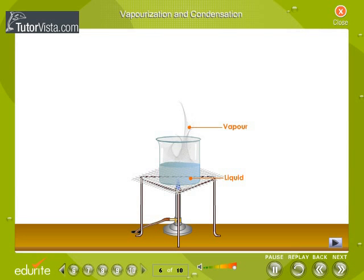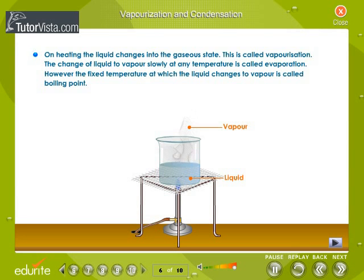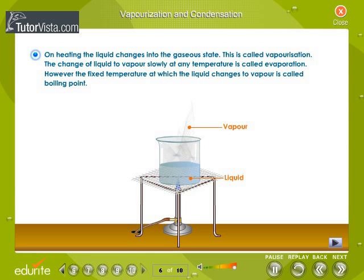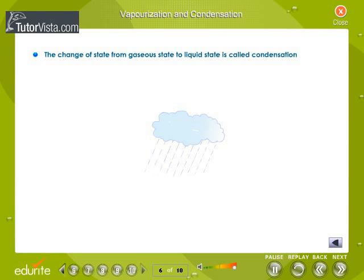Vaporization and condensation. On heating, the liquid changes into the gaseous state. This is called vaporization. The change of liquid to vapor slowly at any temperature is called evaporation. However, the fixed temperature at which the liquid changes to vapor is called boiling point. The boiling point of pure water at one atmosphere pressure is 100 degrees centigrade. The change of state from gaseous state to liquid state is called condensation.